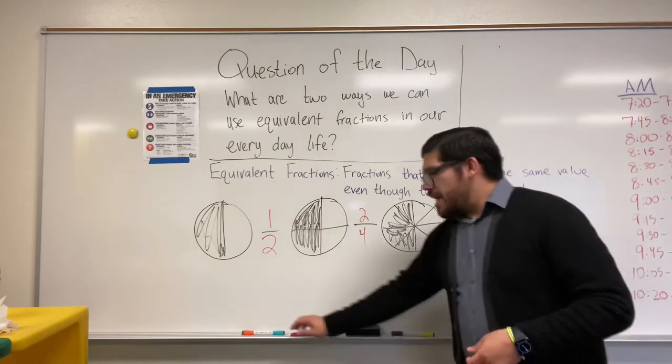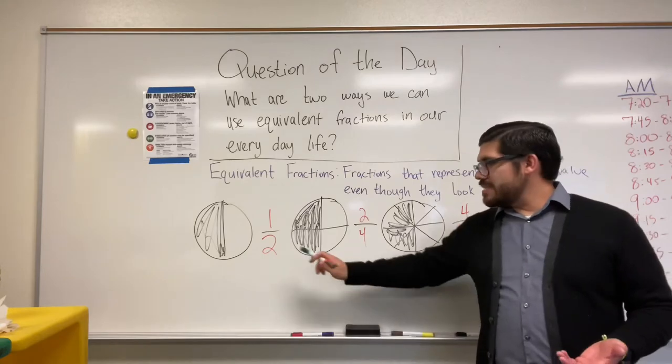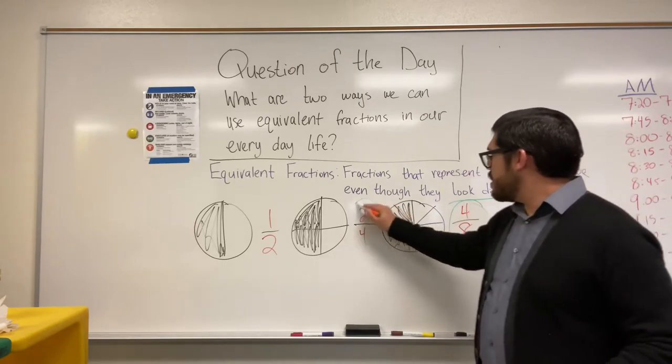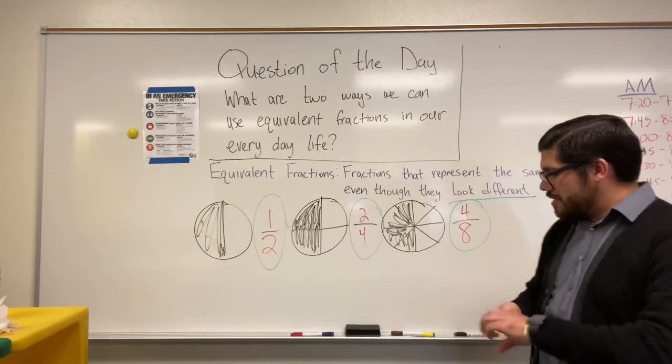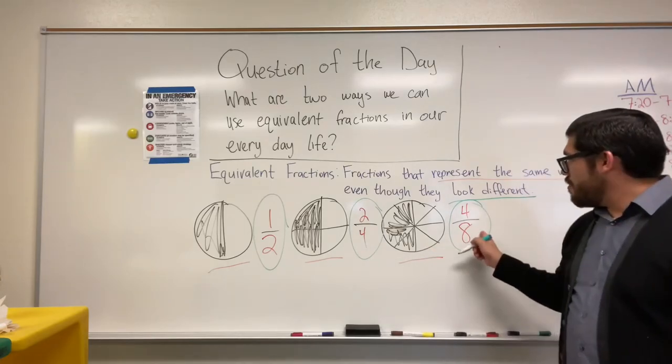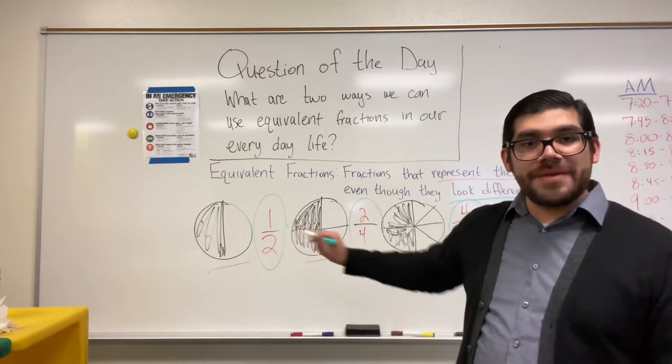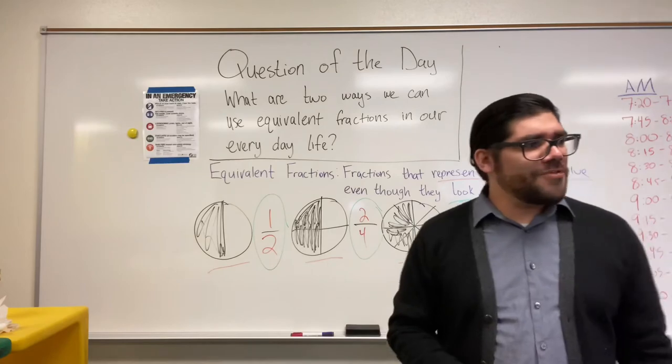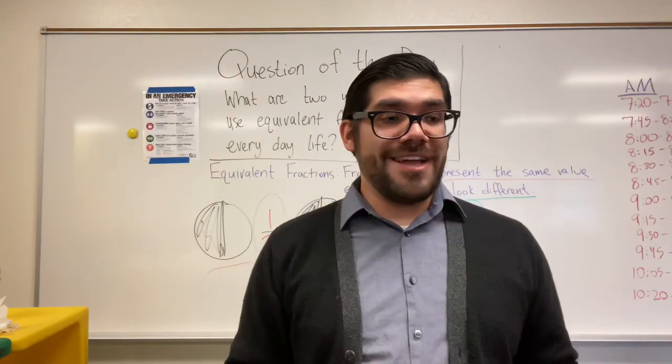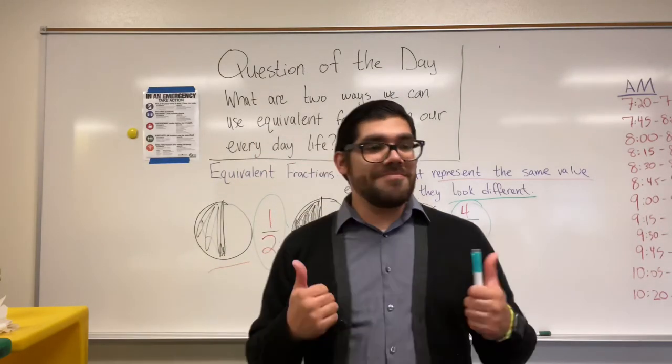So oddly enough, four over eight, two over four and one over two all look different, but they represent the same value, right? So they look different, but each one of those represents one half. Okay. So four over eight is equivalent to two over four, which is equivalent to one over half. I mean, one over two. With that being said, is four over eight equivalent to one over two? Yes, that's right. So we can all identify equivalent fractions now, right? Go ahead and write down your answers to the question of the day. And on your way out today, go ahead and hand me that slip and you're good to go. Thank you.